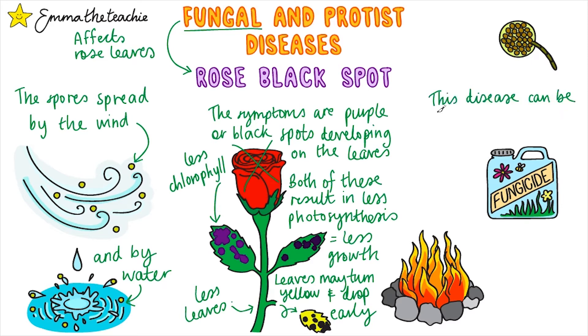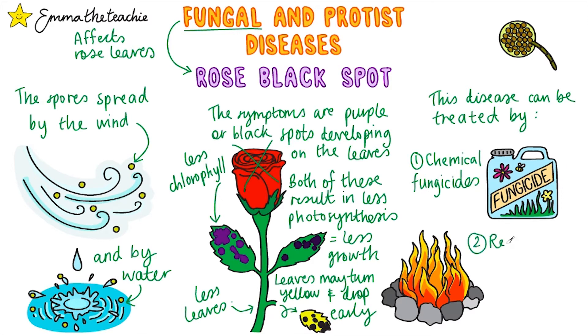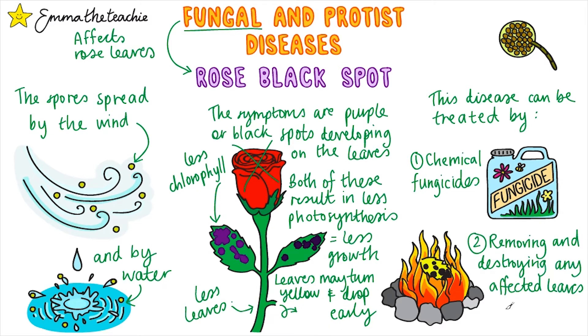This disease can be treated in two ways. Firstly, we've got chemical fungicides that kill the spores, and secondly, removing and destroying any affected leaves. This is usually done by burning them.